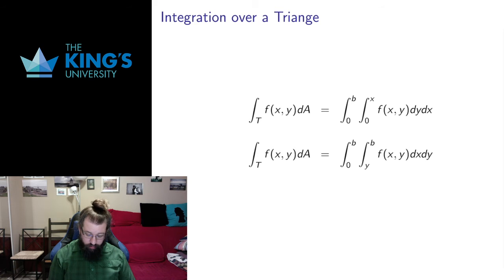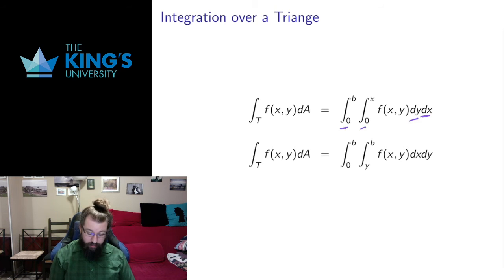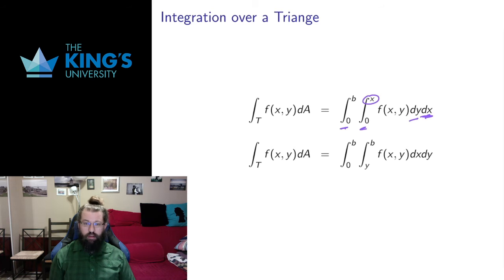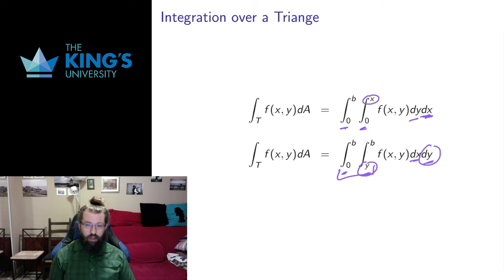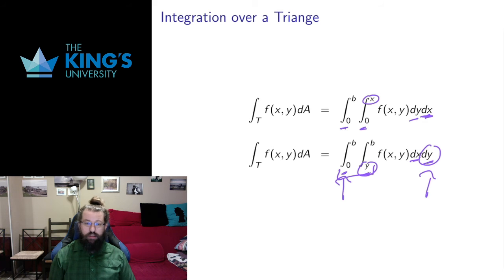Notice: when x has constant bounds, x must appear in the outside integral, and y — which depends on x — must appear in the inside integral. This makes sense because x only makes sense inside the x integral. If I switch them, if y has constant bounds, then y goes in the outside integral and x — which depends on y — goes inside the y integral. The key thing to remember is: if a variable shows up in a bound, that bound must be inside the integral for that variable. A variable can never show up outside of its own integral.